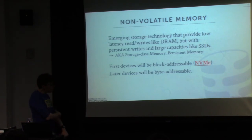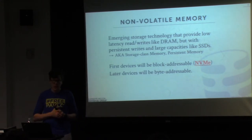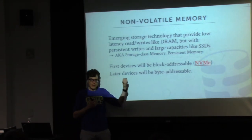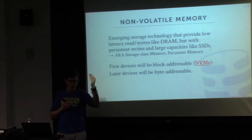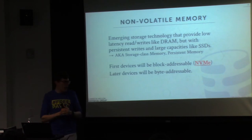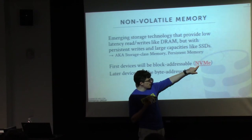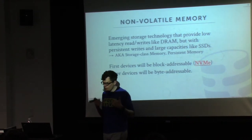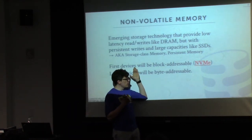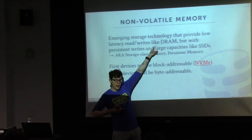The first devices will be completely block addressable — looking like a NAND flash card sitting on the PCI Express bus, where you read and write in terms of blocks. The protocol for this is NVMe. You can use the NVMe protocol for NAND flash, but that's not what I mean when I say NVM. These block-addressable devices aren't going to be that interesting from a database perspective — they'll just look like a faster version of the NAND flash we have today.